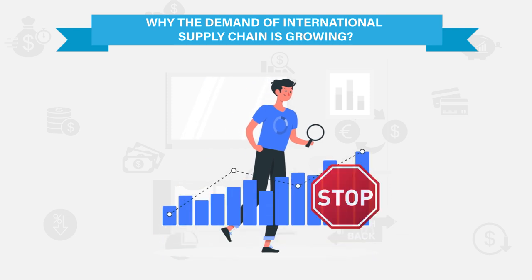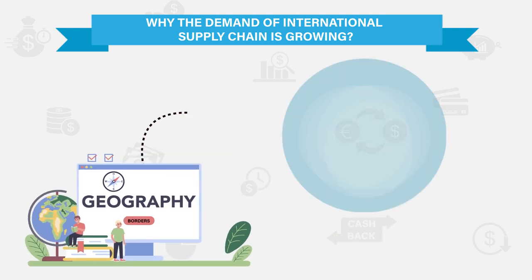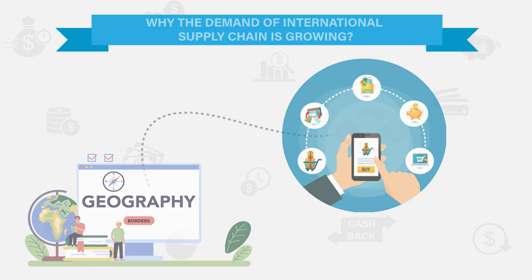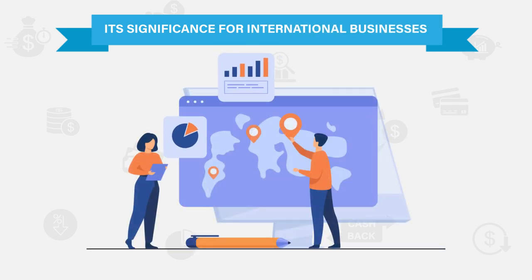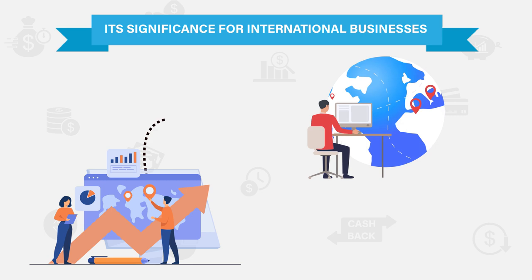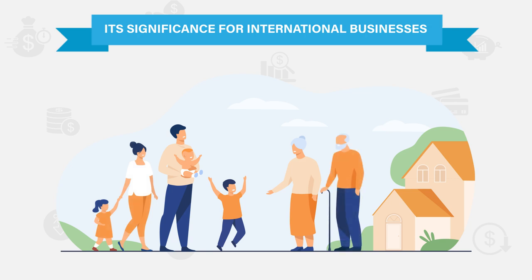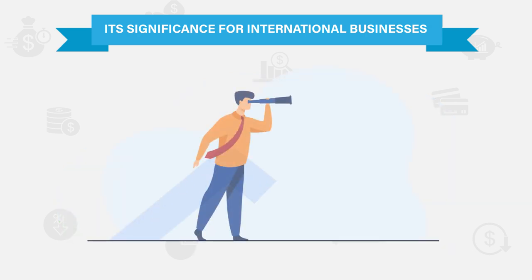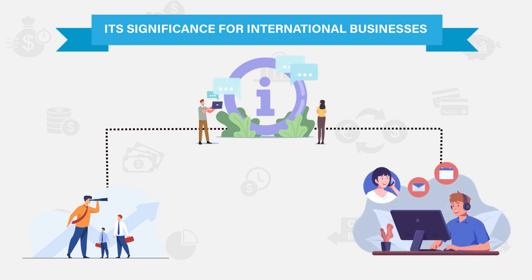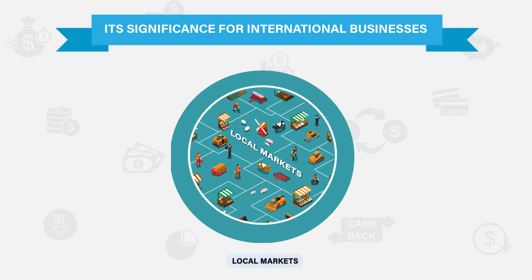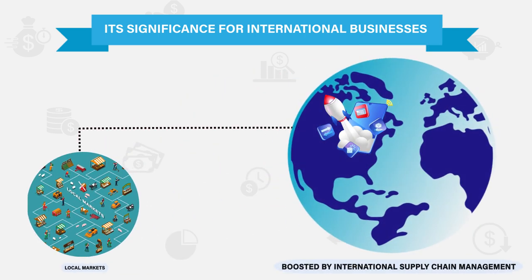This particular trend is not about to stop, as end consumers are learning that geographical borders are inexistent when it comes to getting the products they need. International business has a lot to gain from international supply chain management, because it stimulates the growth of various economies, it helps in the improvement of standards of living, it helps with the creation of new jobs, it answers to the needs of people, and improves customer services. All of these aspects grow and improve together with the development of local markets, which are boosted by international supply chain management.